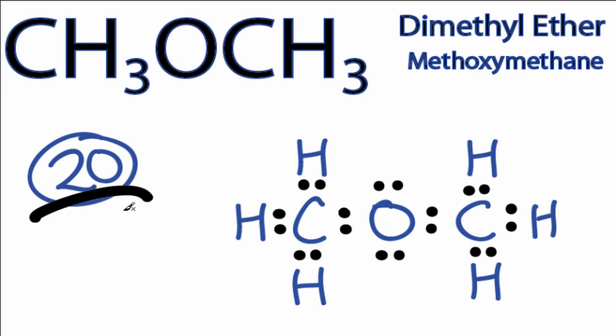Each of the carbons has 8 valence electrons, the oxygen has 8 valence electrons, and the hydrogens have 2. So all of the outer shells are full for the atoms in the CH3OCH3 Lewis structure.